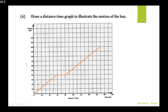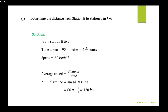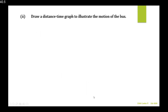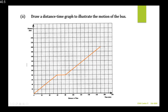To find the distance for this section, we use our answer from Part 1: the distance from B to C is 120 kilometers. So from the 80-kilometer mark at station B, we add 120 kilometers to reach 200 kilometers at station C, arriving at 170 minutes. This is what the complete distance-time graph looks like.